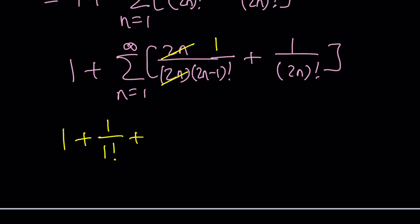1 over 1 factorial, 1 over 3 factorial, plus 1 over 5 factorial. Plus this one is evens: 1 over 2 factorial, 1 over 4 factorial, 1 over 6 factorial.